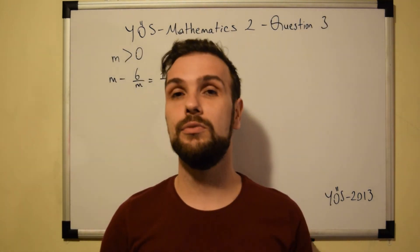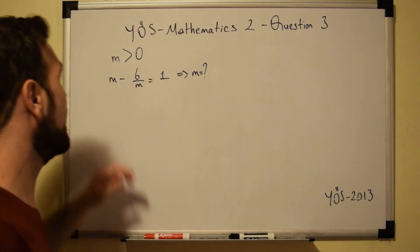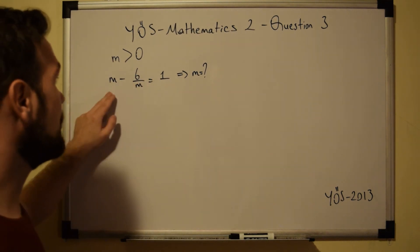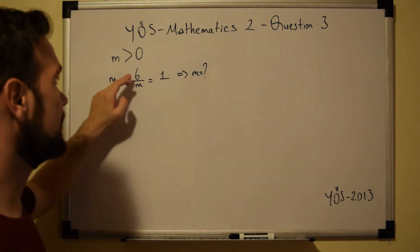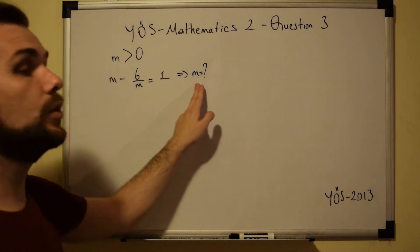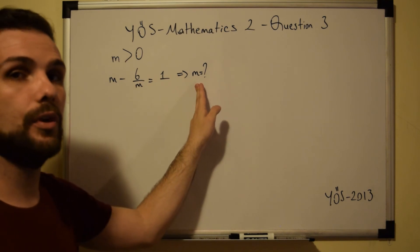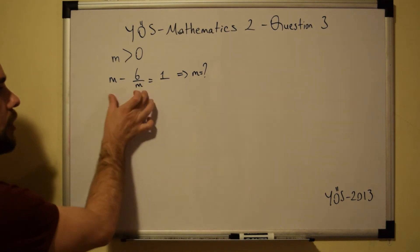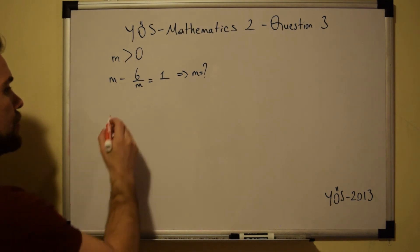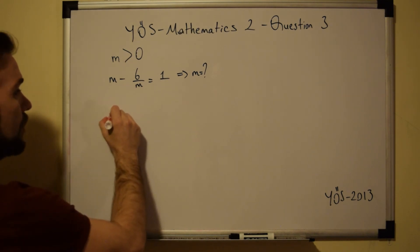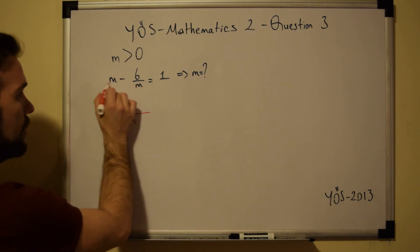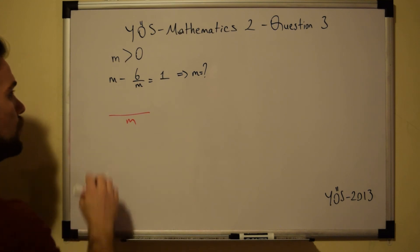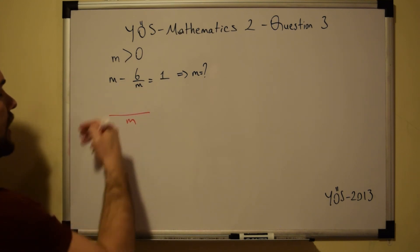Welcome to the third question. In this question we have: if M is greater than 0 and M minus 6 over M equals 1, what is the value of M? As the first step we find the common denominator. The common denominator is M, since the denominator for the integer M is 1.